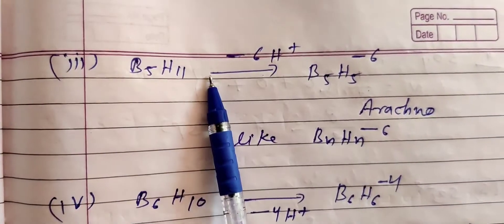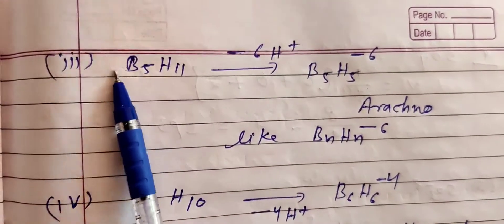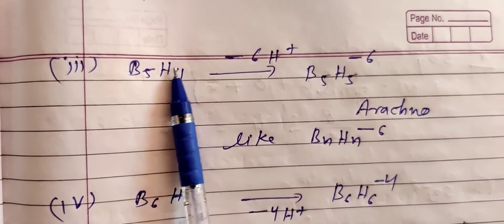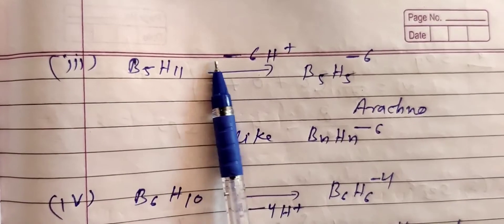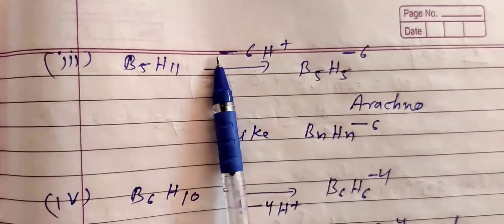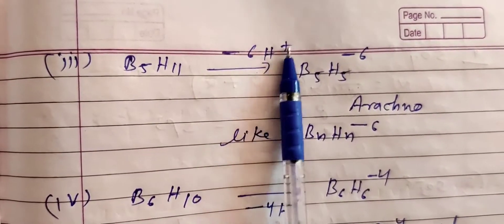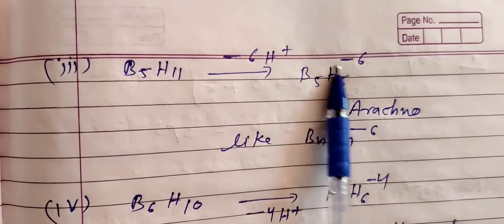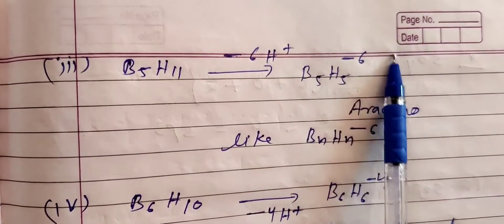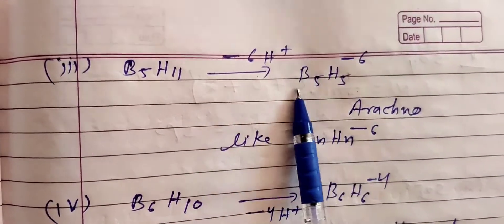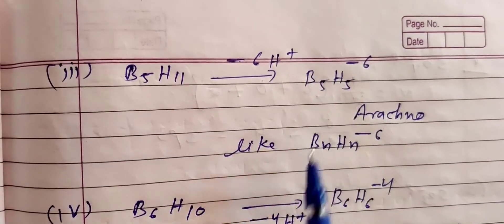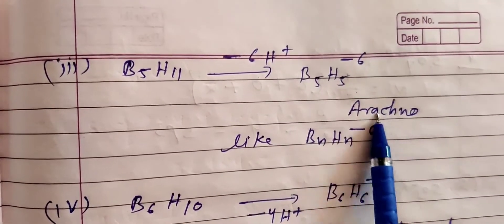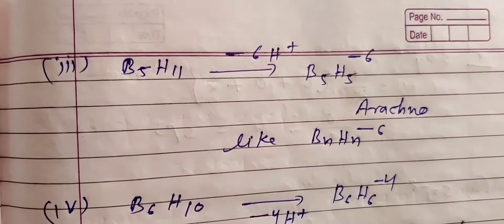Example: B5H11. As many boron atoms as there are, there should be equal hydrogens. Extra hydrogens are removed as H⁺. There are 6 extra hydrogens, so 6 H⁺ are removed, giving a charge of minus 6. This matches BnHn₋₆, so the structure is arachno type.